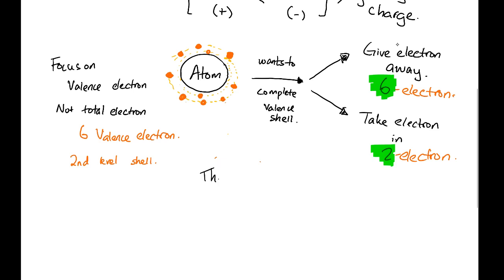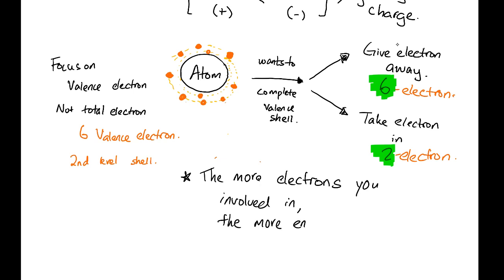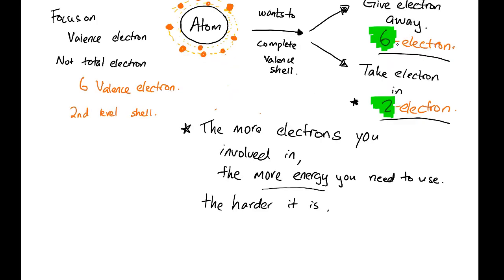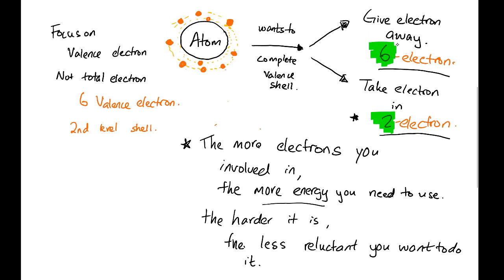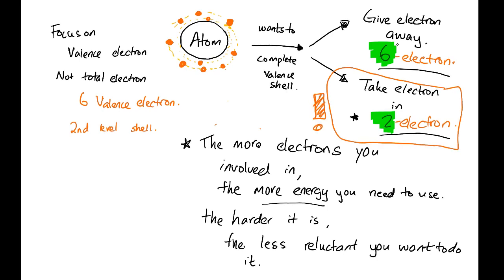How do we know which way this atom would choose? One way is to compare the number of electrons involved. The more electrons you involve, the more energy you need to use. Giving away six electrons would be very energy-demanding. Taking in two electrons would be more energy-efficient because it involves fewer electrons. The golden rule is: the more energy you use, the harder it is, and the less willing you are to do it.